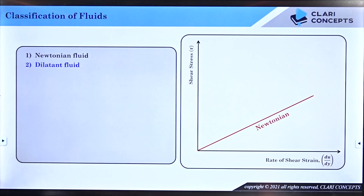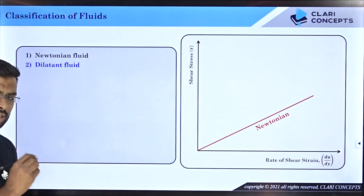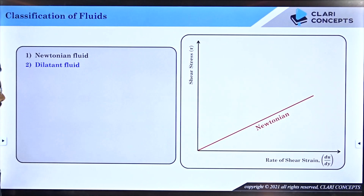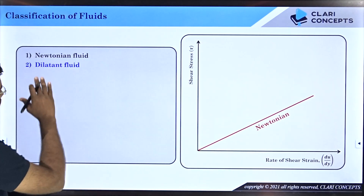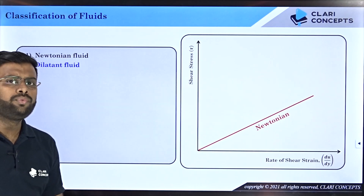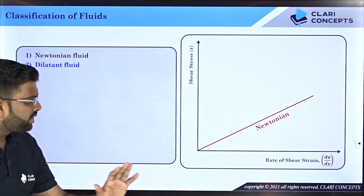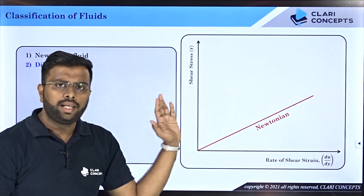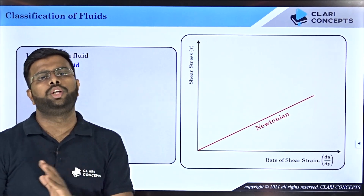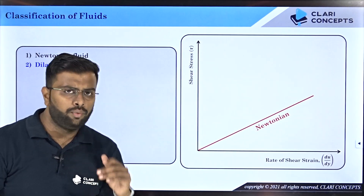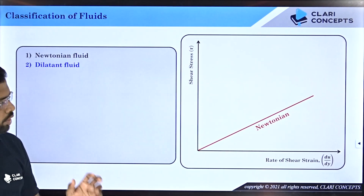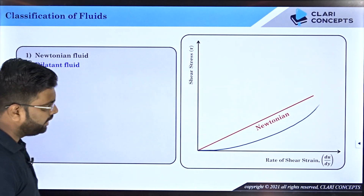Let us move on to the next type: dilatant fluid. Please concentrate here because understanding this is a little tricky. All fluids which are not Newtonian in nature are said to be non-Newtonian fluids, and dilatant fluid is one category within non-Newtonian fluids. When I draw the graph of shear stress versus rate of shear strain for a dilatant fluid, it is no longer a straight line but a curve.